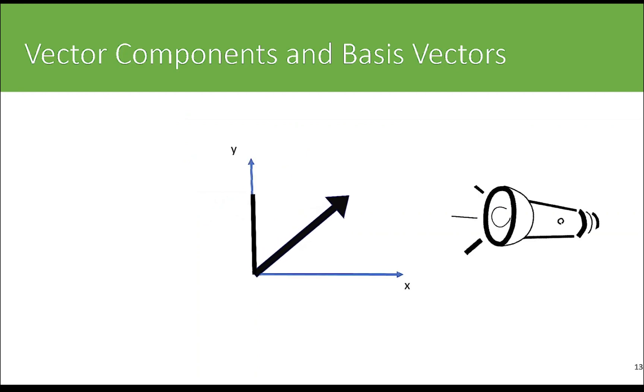In order to find the y component, I am going to project this vector onto the y-axis. Similarly, in order to find the x component, I'm going to project this vector onto the x-axis. And how am I going to do that? I want to use this torch to project the vector onto the x and y axes. Firstly, I'm going to shine the light perpendicular to the y-axis, that is parallel to the x-axis, and look for the shadow of the vector on the y-axis.